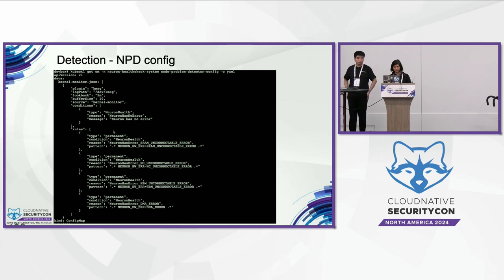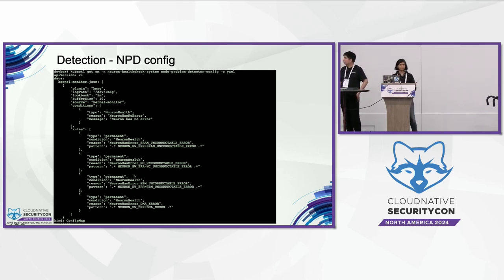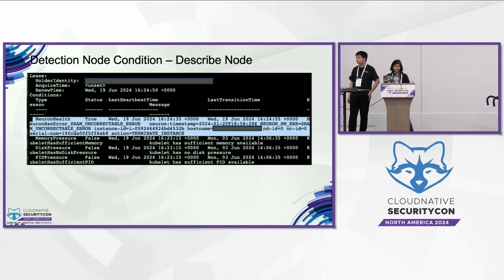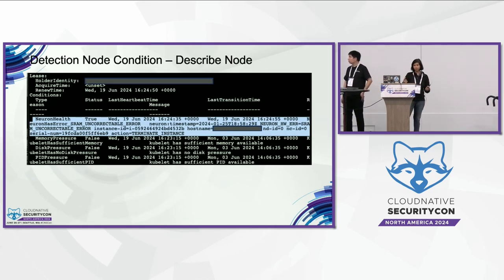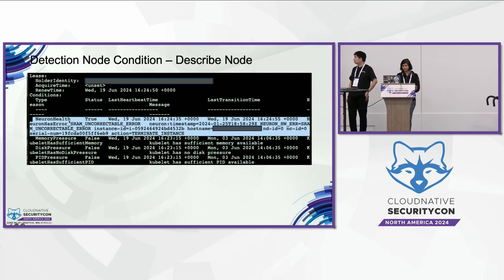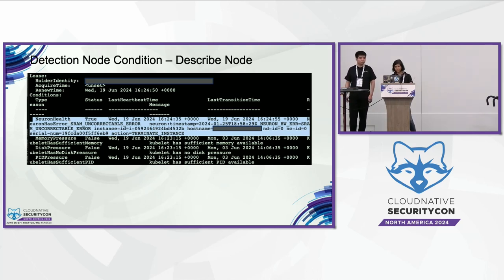This shows sample output of that node condition. When it triggers, it will add to the conditions array on the node object, and the message corresponding to the failure will show up. The message should contain all the details necessary to identify the failure so the operator can make meaningful sense out of it.